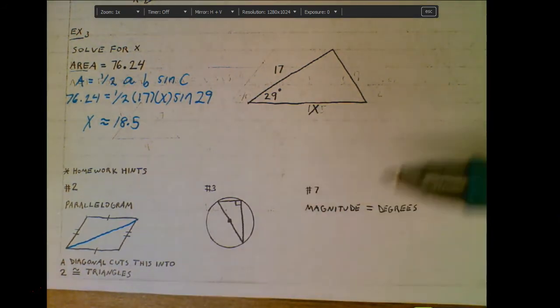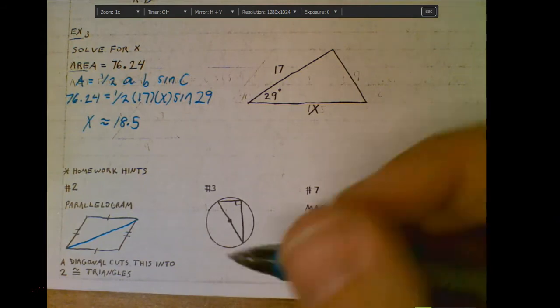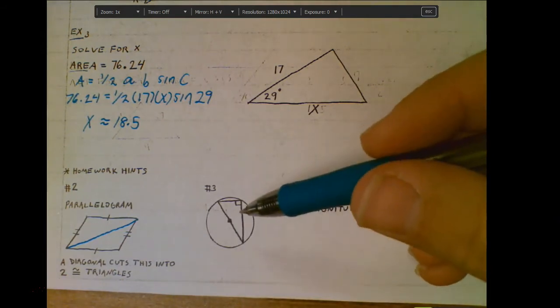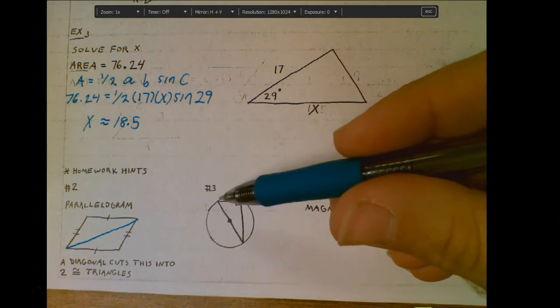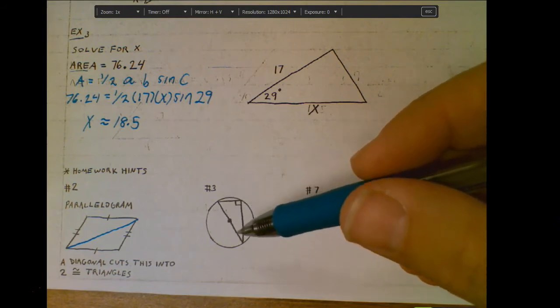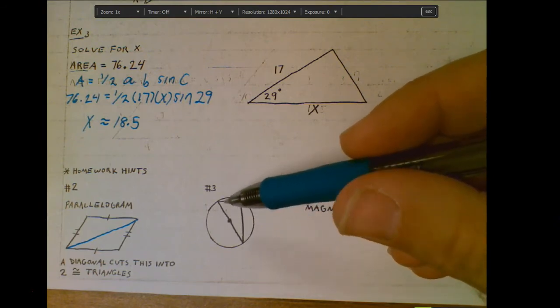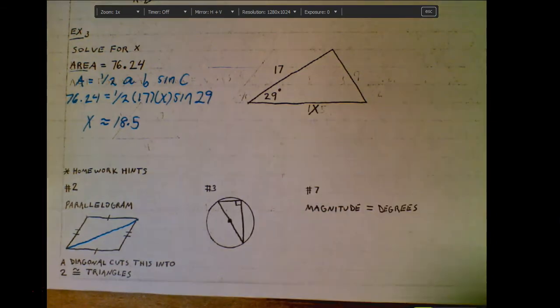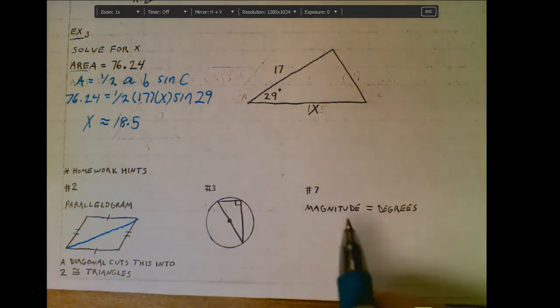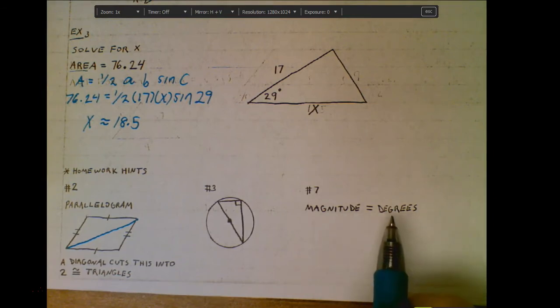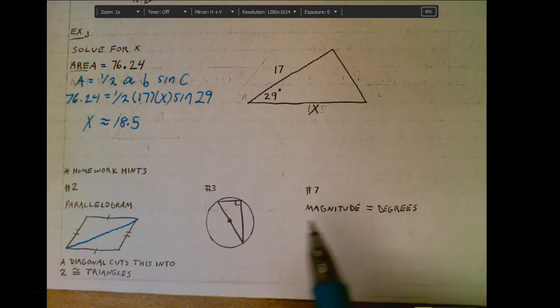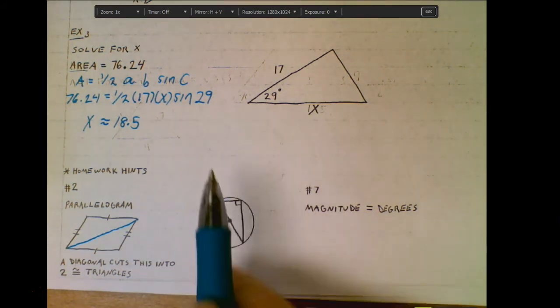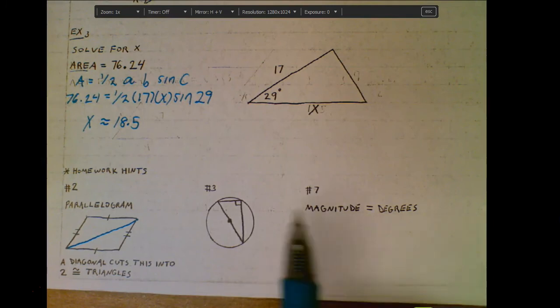For number three, anytime you have a circle and you have a triangle within the circle, if the triangle goes through the center of the circle, meaning it involves the diameter of the circle, it automatically creates a right triangle. And so we're going to use a little right triangle knowledge for number three. On number seven, they refer to a magnitude. Just keep in mind that refers to the degrees of an angle. So when they refer to, like in this case, this would be a magnitude of 29, right? So magnitude is the same as having degrees.